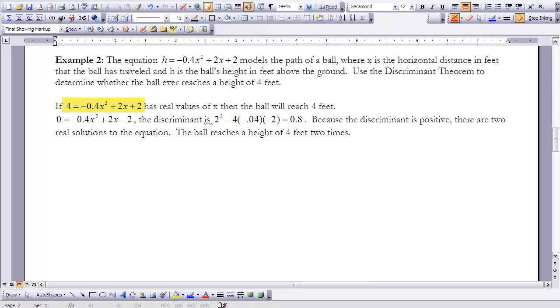So, if I use the discriminant on that, that would be 2 squared minus 4 times negative 0.4 times negative 2. That would be 0.8. So, 0.8 is greater than zero. So, that means the discriminant is positive. So, there are going to be two real solutions to this equation. So, the ball will reach a height of 4 feet two times in this situation.